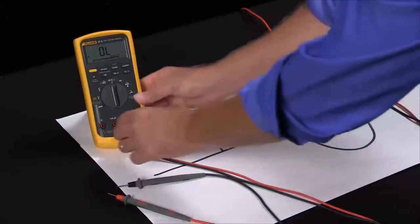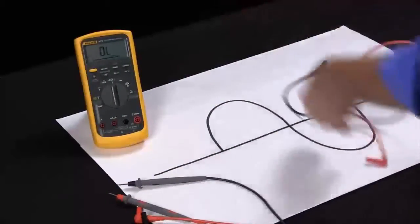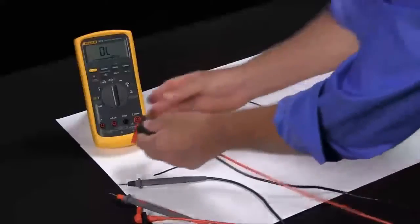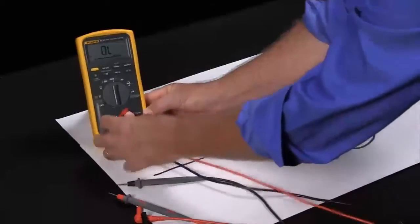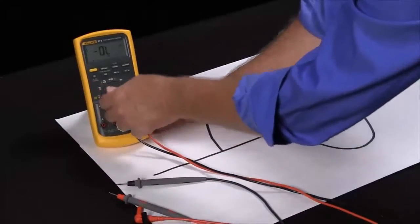So that can be a very handy function. This function can be combined with several other functions within the Fluke 87 to help you troubleshoot some more complex problems. I'm just going to plug in, go to our sine wave.